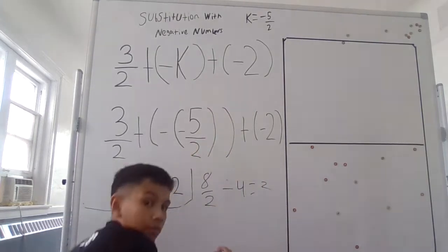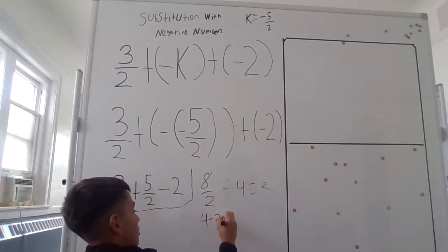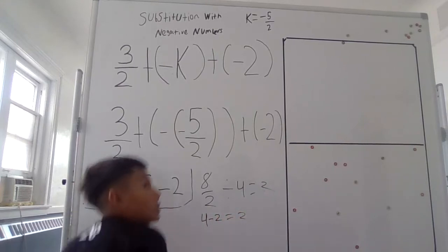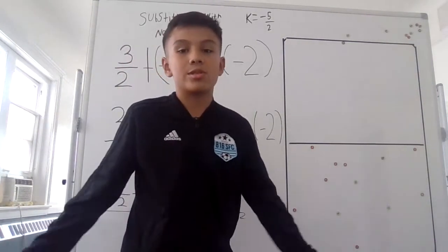So now we use the 4 I had to have 4 minus 2, and that equals 2. So the answer is 2.